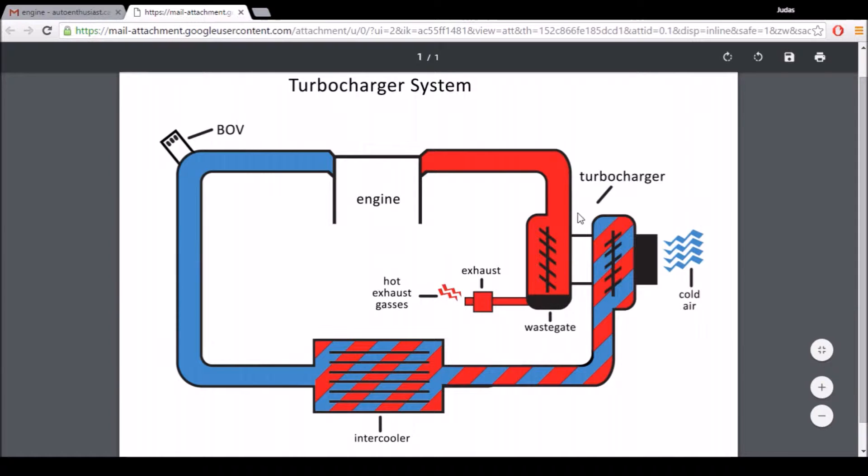So the turbocharger is basically a housing for two turbines that are connected via a shaft. When the hot exhaust gases enter the turbocharger, it spins this first turbine. And because that first turbine is connected to the other turbine via a shaft, the other turbine begins to spin, and that sucks in this outside ambient air, which is cooler than the actual exhaust gases.